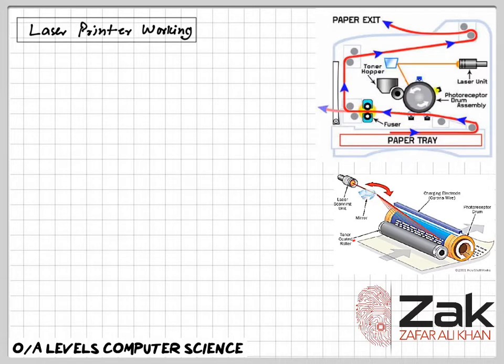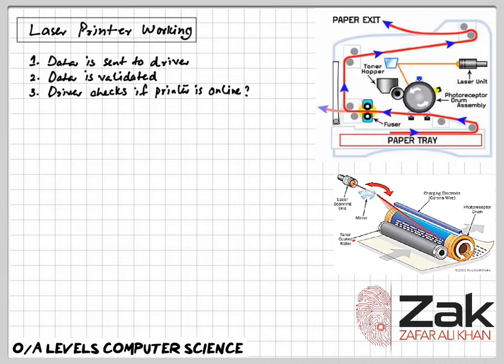When a user wishes to print a document using a laser printer, this is the sequence. Number one: data from the document is sent to the printer driver. The printer driver ensures that the data is in the format that the chosen printer can understand.